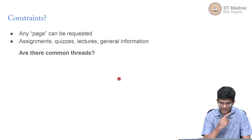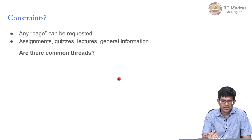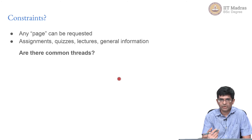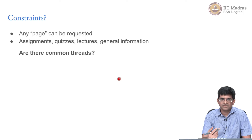Any page or URL can be requested. In the example given, you could have assignments, quizzes, lectures, or general information about the course or the website — all of those could come back as a response to a click. One question to ask is: fine, I build the NPTEL platform with quizzes, lectures, and various other things. Then I go and decide to build something else — maybe a shopping cart application to recreate Amazon or Flipkart. Over there instead of quizzes and lectures, I have objects that can be bought, shopping carts, and users instead of students — but very similar kinds of ideas.